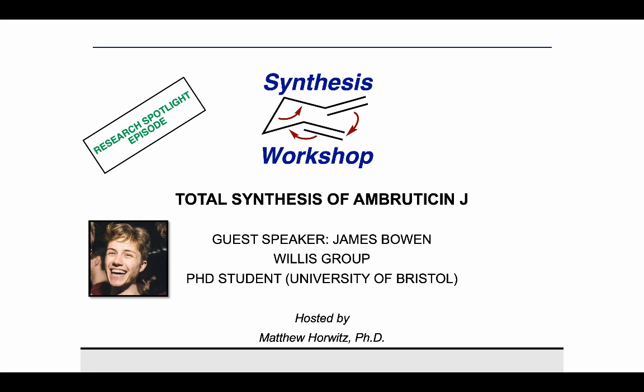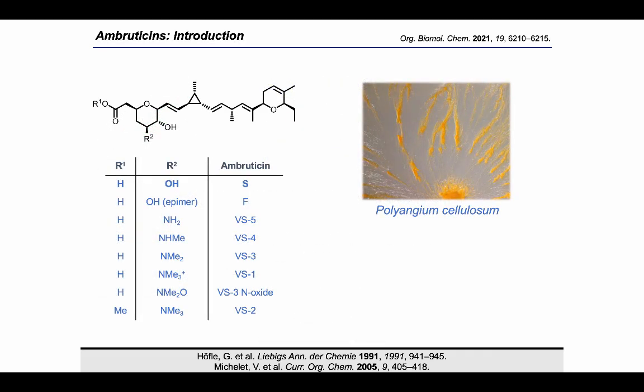Thank you for the introduction Matthew and for the kind invitation to talk about my work on this awesome platform. My name is James and I'm a final year PhD student in the Willis group at the University of Bristol. I will be discussing my recent total synthesis of Ambruticin J. The Ambruticins are a family of polyketide natural products originally isolated from the gliding bacteria Polyangium cellulosum in 1977.